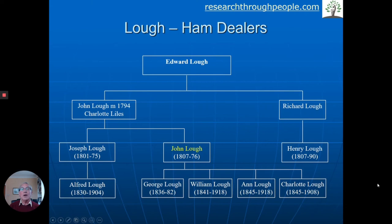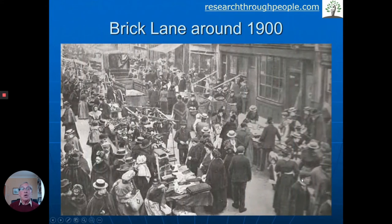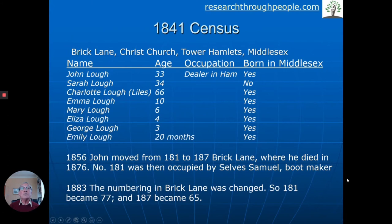Let's take another example — the other end of the country, in London. Here's the Luff family: Edward had two children, John and Richard, and their grandchildren and great-grandchildren were ham dealers in the East End of London. We're going to look at John Luff in particular, born 1807. This time I'm going to finish with the house rather than start with it, because there's an interesting story here. John Luff and the family lived on Brick Lane in Spitalfields — a well-known trading street, as shown in this old photo of the stalls and people buying goods.